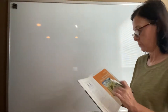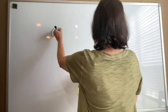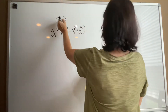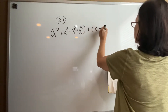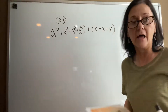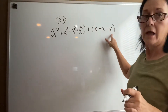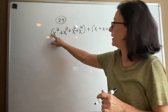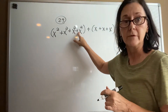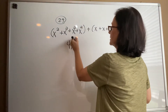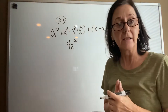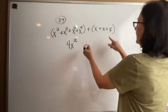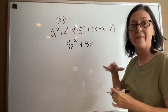The most important problem to look at is number 29: x squared plus x squared plus x squared plus x squared, plus x plus x plus x. We look for like terms — all the x squared terms are like terms, and all the x terms are like terms. When adding like terms, we add the coefficients. The coefficient is 1 each time, so four x squared's give 4x squared, and three x's give 3x. We do not change the exponents.